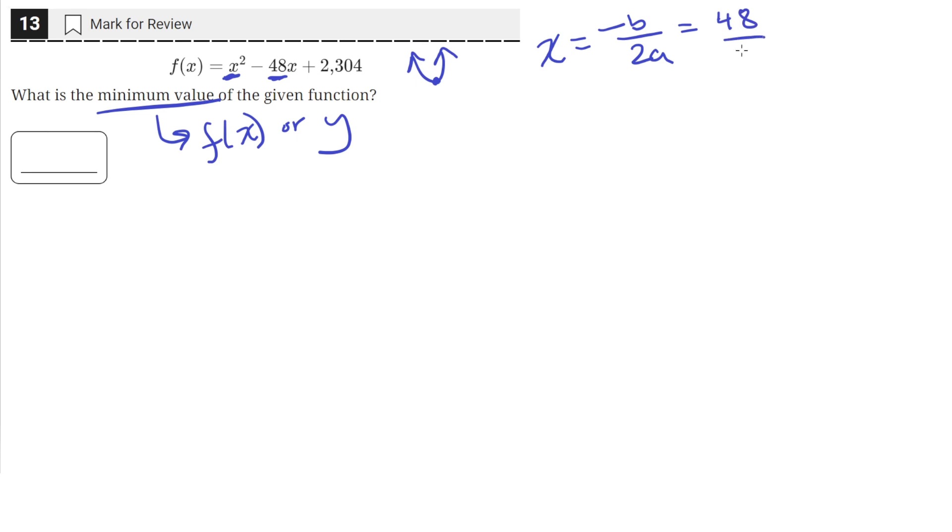This would look like negative b, so negative negative 48, that's just positive 48 over 2 since a is 1. Then we can plug this back into the function to find the value of y at the vertex, which would give us the minimum value of the function.